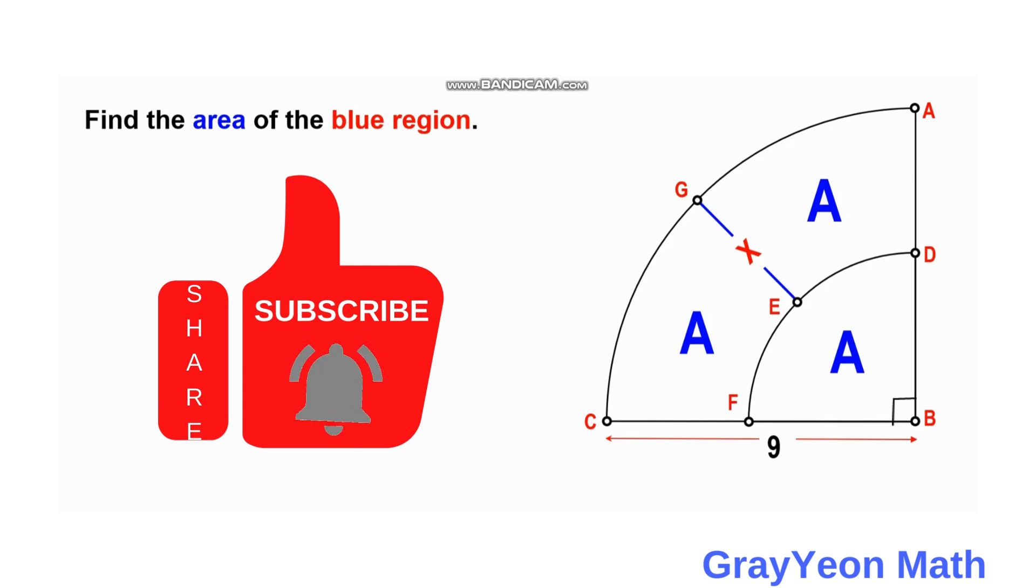And the total radius of this quarter circle, the biggest quarter circle, is 9 units. And we are required to find the length of the segment X.